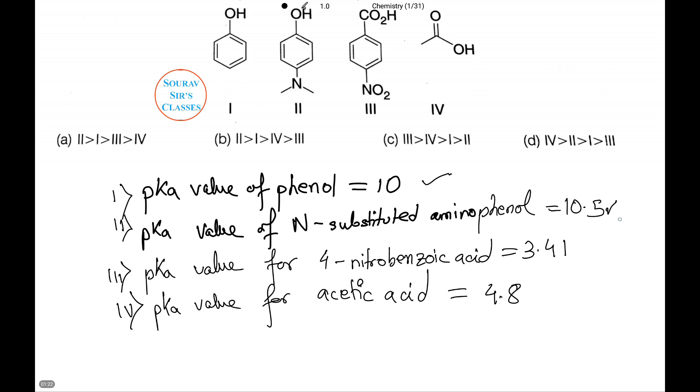For the third one, 4-nitrobenzoic acid, the pKa equals 3.41. And lastly, acetic acid has a pKa value of 4.8. Now we rank in order and it comes to 2 > 1 > 4 > 3.